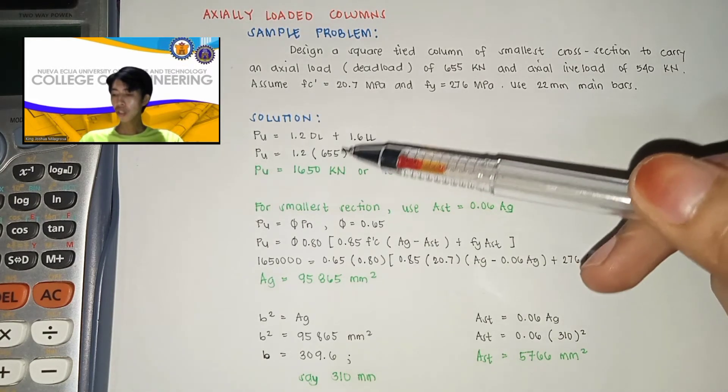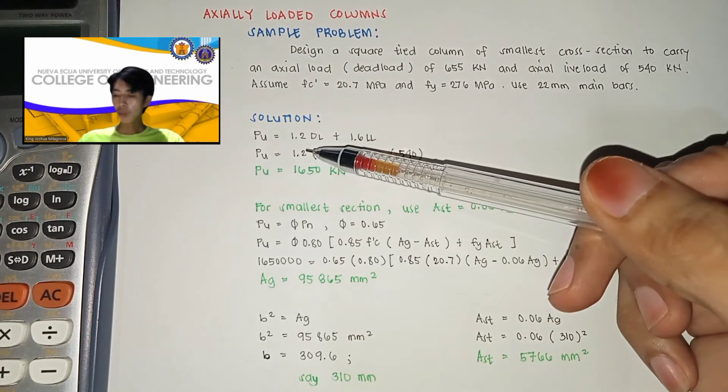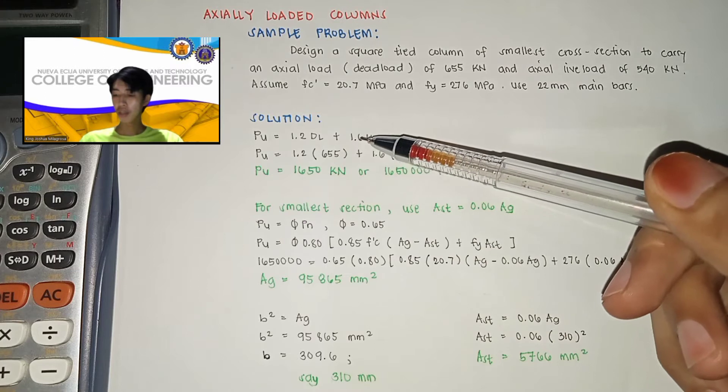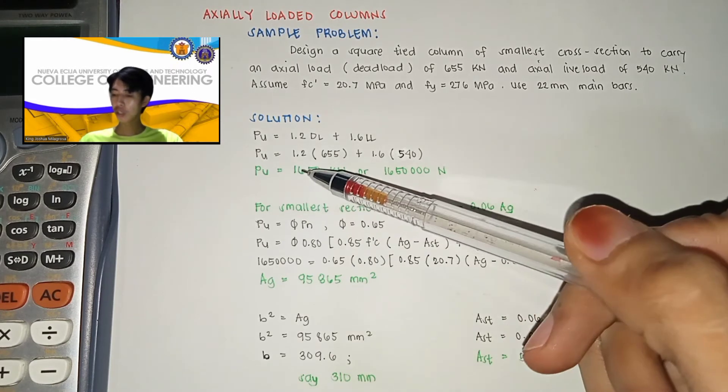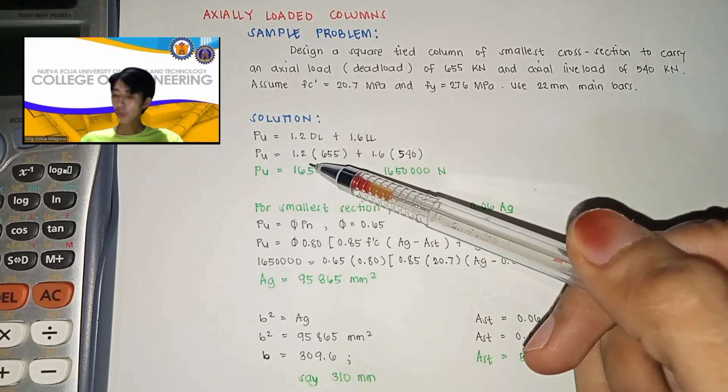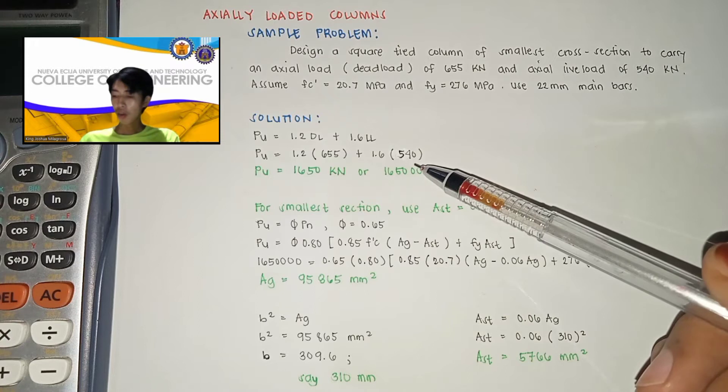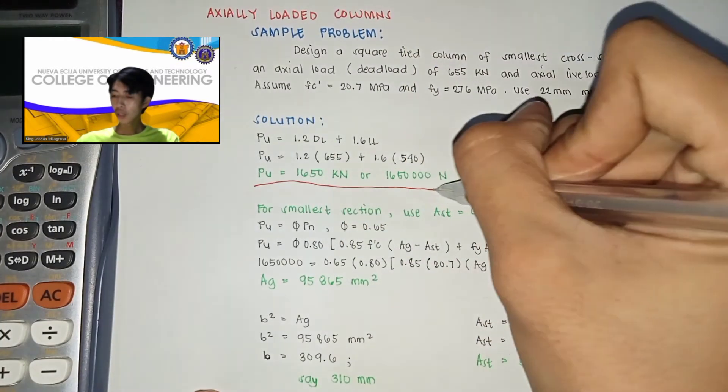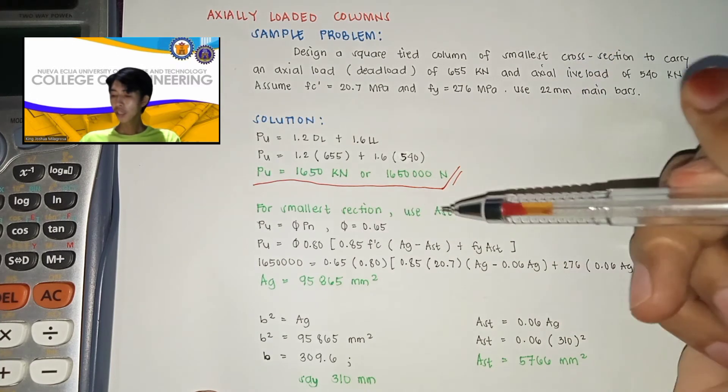For our solution, first, kumpitin muna natin yung PU which is equal to 1.2 ng dead load plus 1.6 ng live load. So this equation is from NSCP 2015. By substituting the value, PU is equal now to 1.2 times 655 plus 1.6 times 540. Then makukuha natin PU is equal to 1,650 kN or equal yan sa 1,650,000 N.